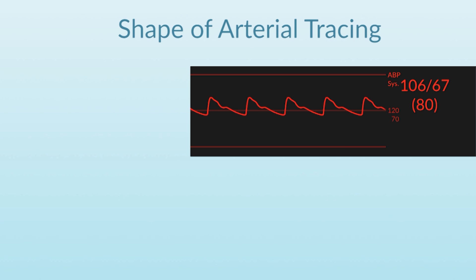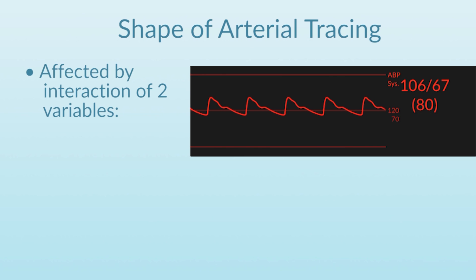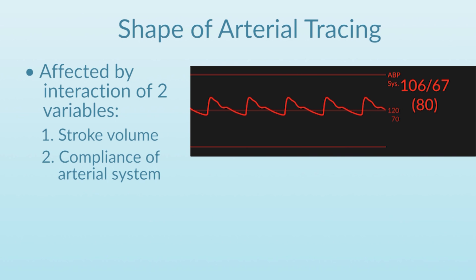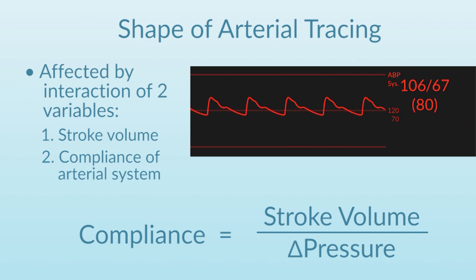To start with, it's important to remember that the shape of the arterial trace seen on a monitor is really due to the interaction of essentially two variables: the patient's stroke volume — the volume of blood ejected into the arterial system with each beat — and the compliance of the arterial system into which the blood is being ejected. When looking at A-line traces, the pulse pressure can be an index of stroke volume, but it depends entirely on the compliance of the patient's arterial system.